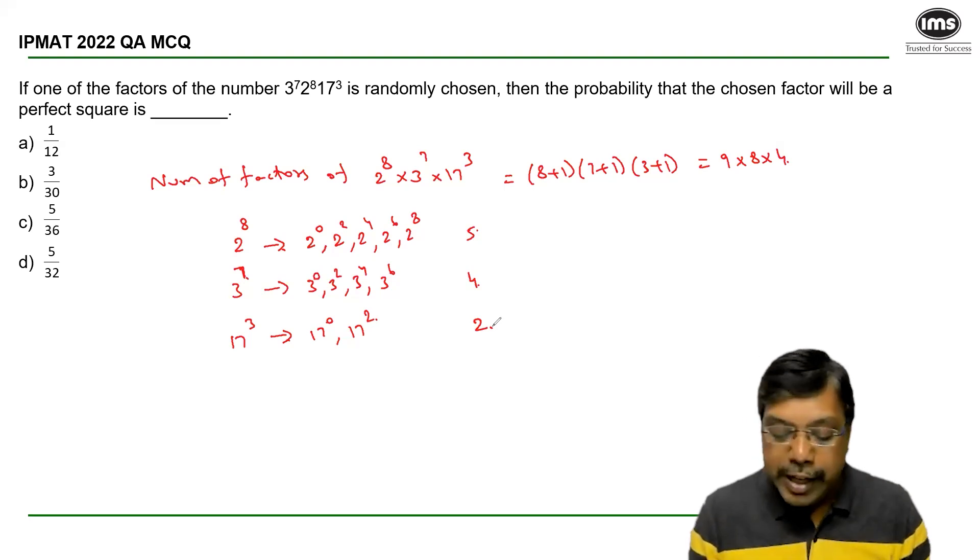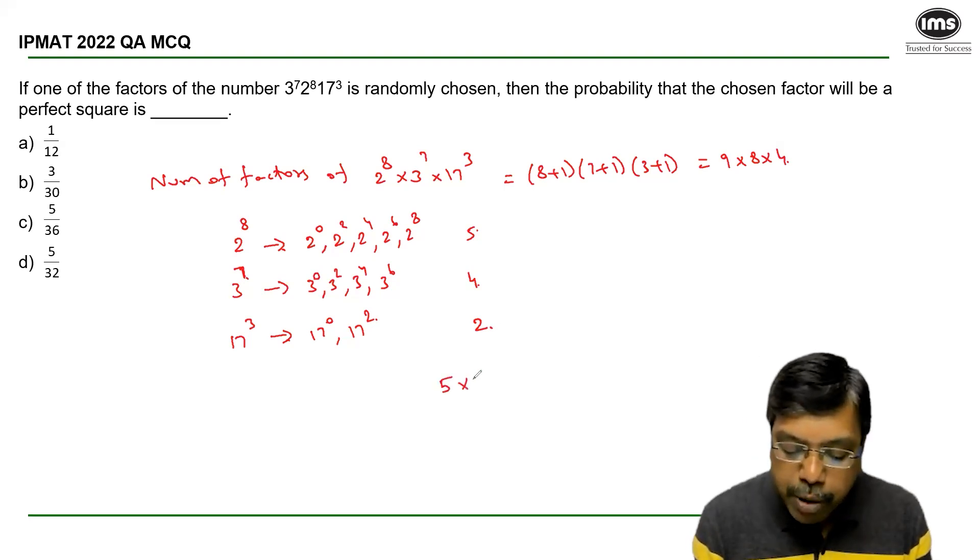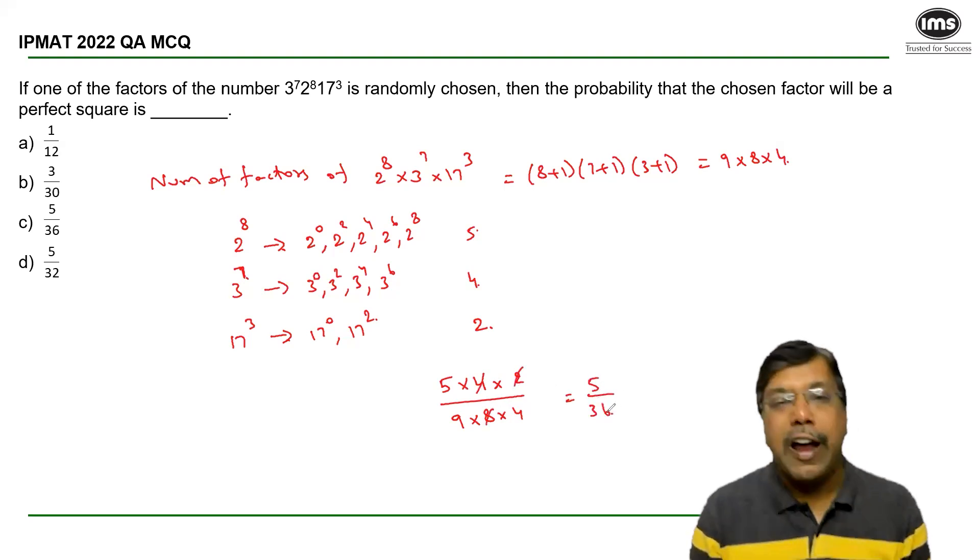Hence, the probability is the number of favorable cases by total number of cases. Now, 5 × 4 × 2... 4 × 2 is 8. Hence, the answer is 5/36.